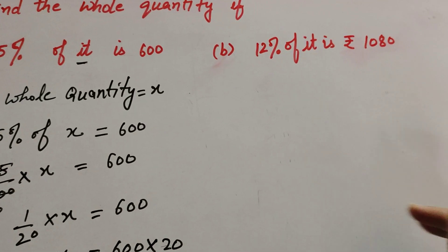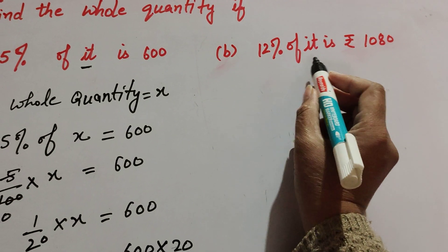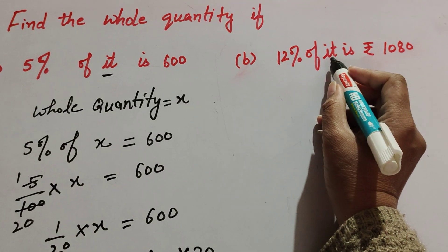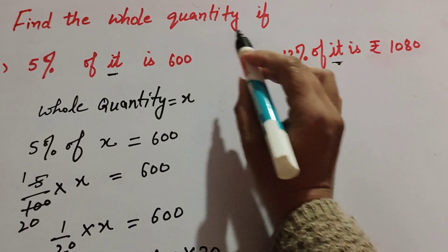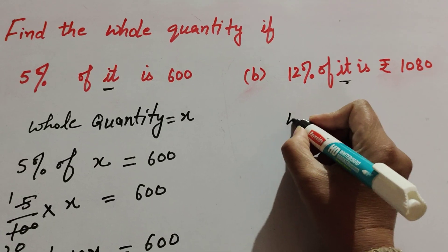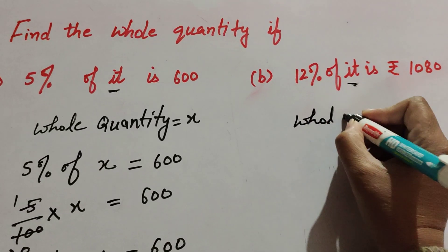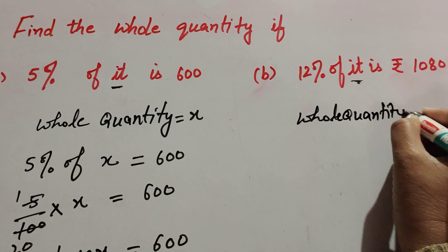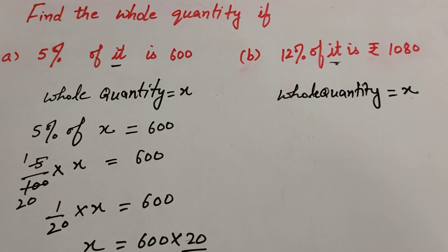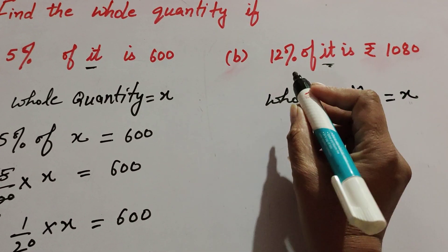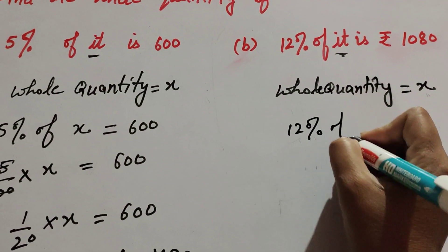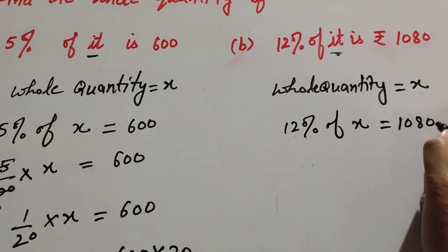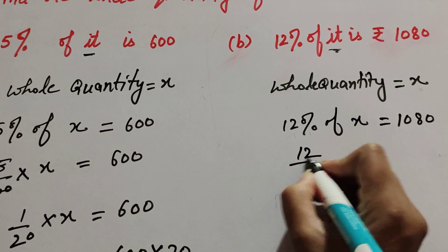Now we move to part b: 12% of it is 1080 rupees. Here 'it' means the whole quantity we have to find. So we suppose whole quantity equals x. Therefore 12% of x equals 1080.